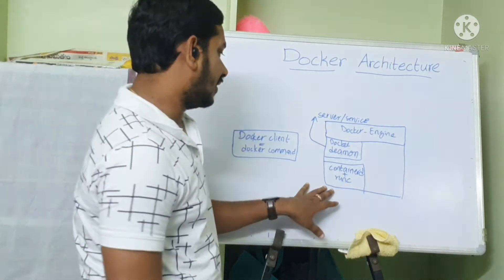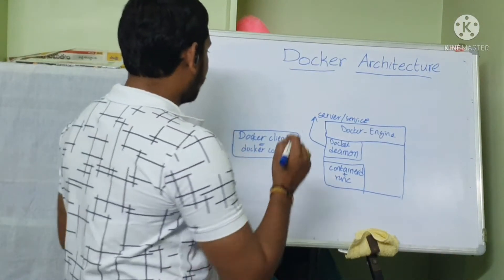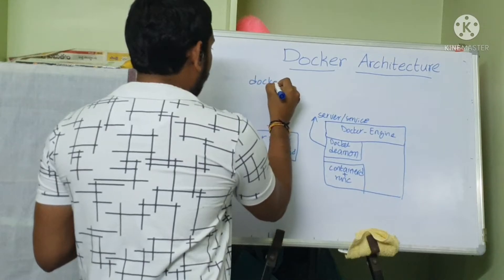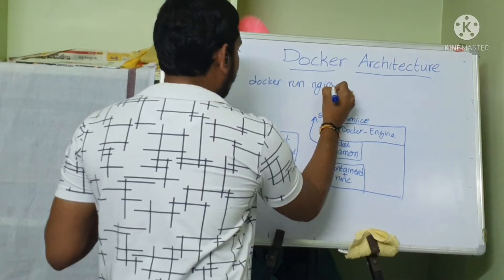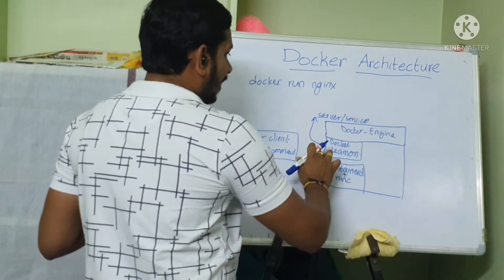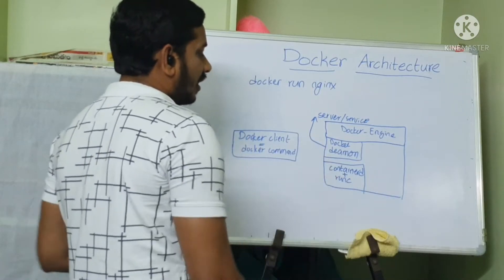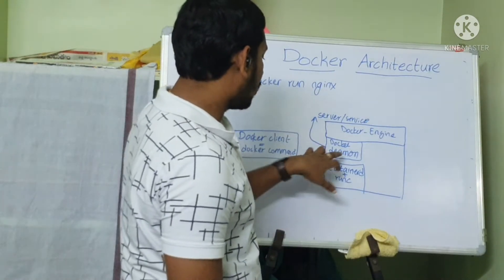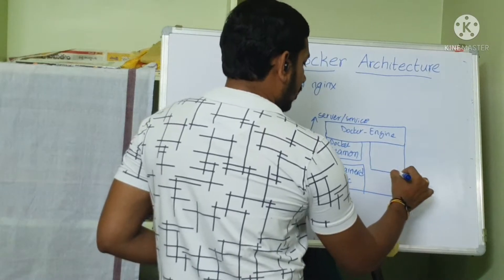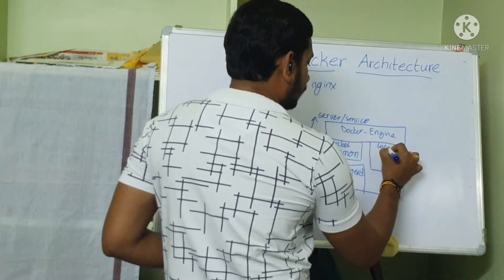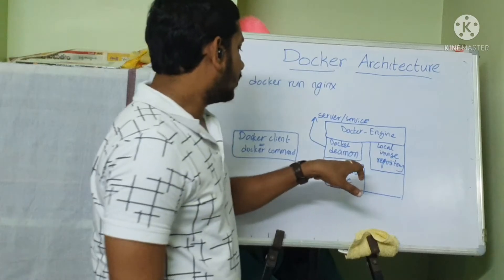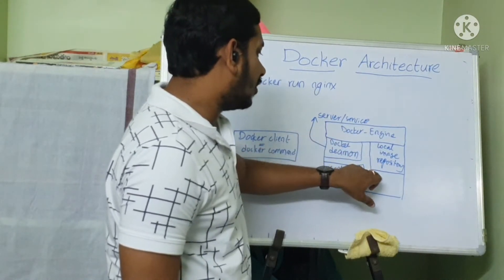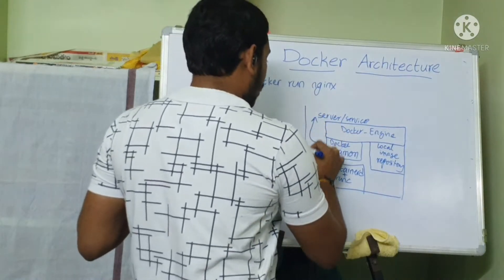You will understand more about these things later. Whenever you run a Docker run nginx command, this will reach the Docker daemon. Then Docker daemon will check — there is something called a local image repository. This will check whether the image is available locally inside the host.